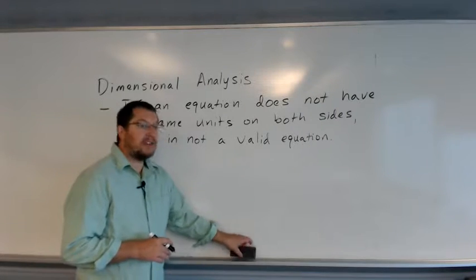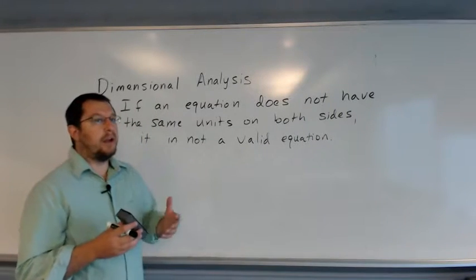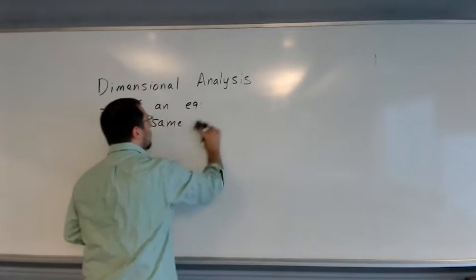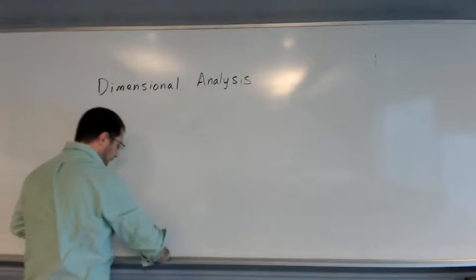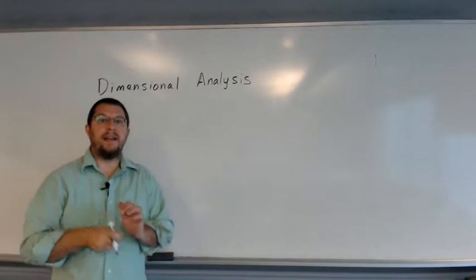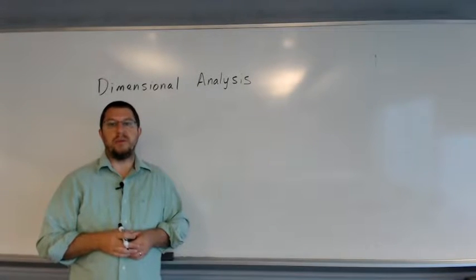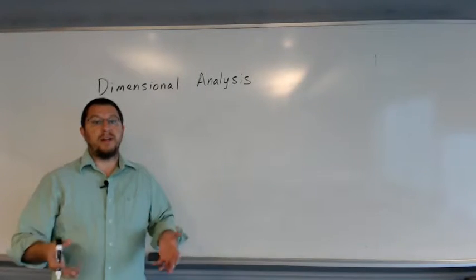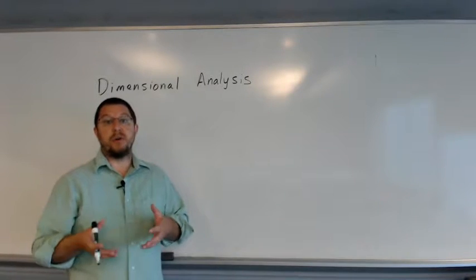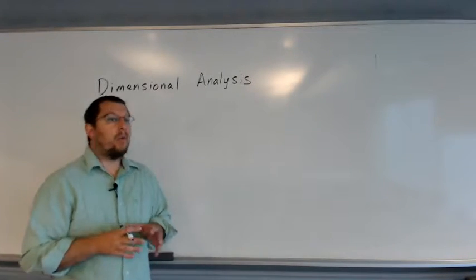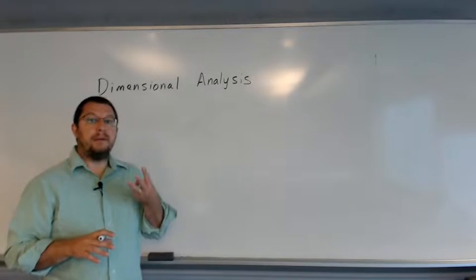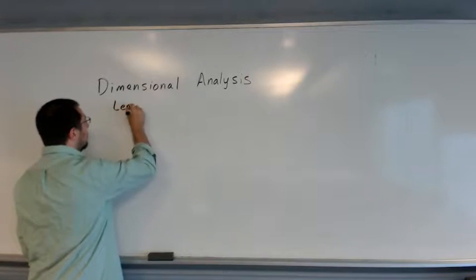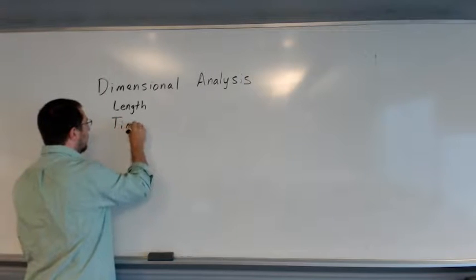How can we actually use dimensional analysis to look at the validity of equations? First, we have to look at what the units of some of the typical types of quantities we're going to be using are. We've already defined speed as distance over time, and we're going to define acceleration as distance per unit time squared. There are three basic quantities that we use in mechanics, and those are length, time, and mass.